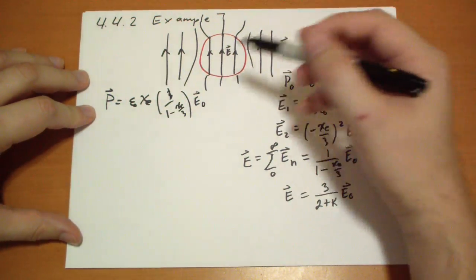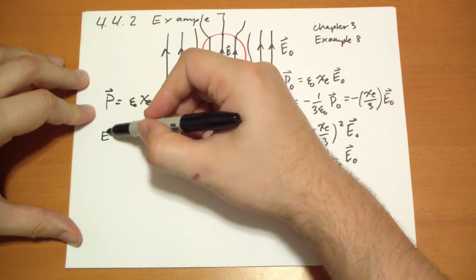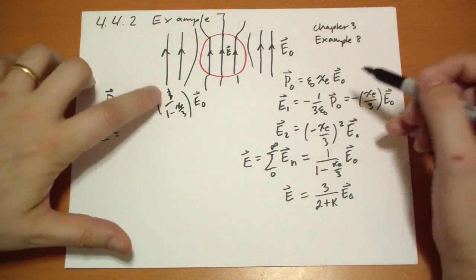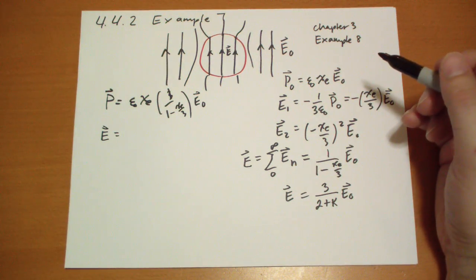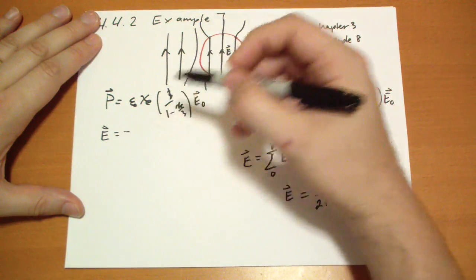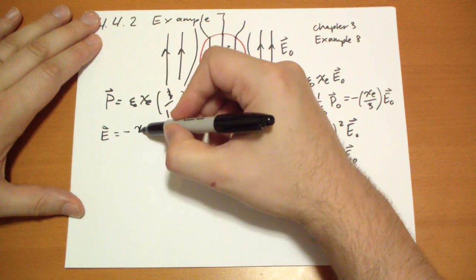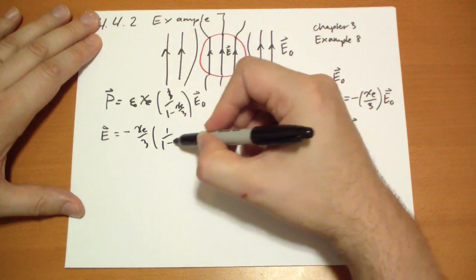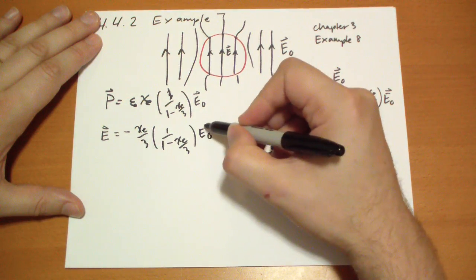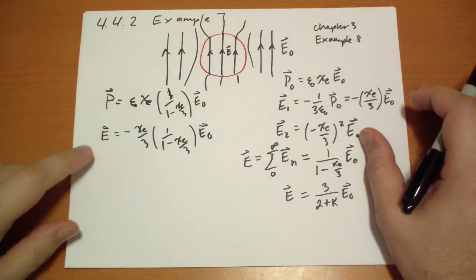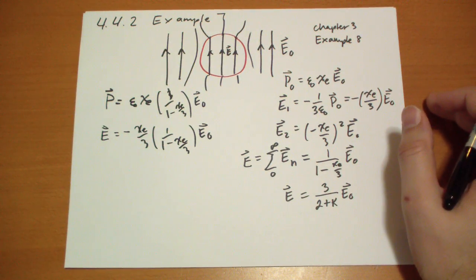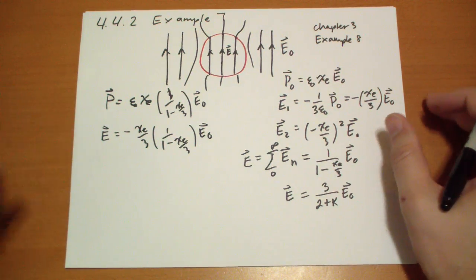And what's the electric field this produces? Well, that's going to be negative 1 over 3 ε₀ of this junk. So that gives us negative 1 χₑ over 3 times 1 over 1 minus χₑ over 3 times the electric field. And the question is, does this, the resulting electric field, does this change the field at all? So really, we want to see if this is zero or non-zero, or what it is.